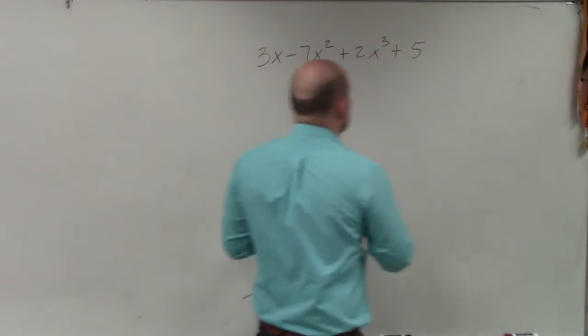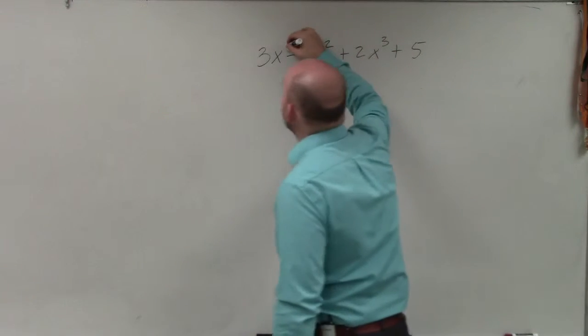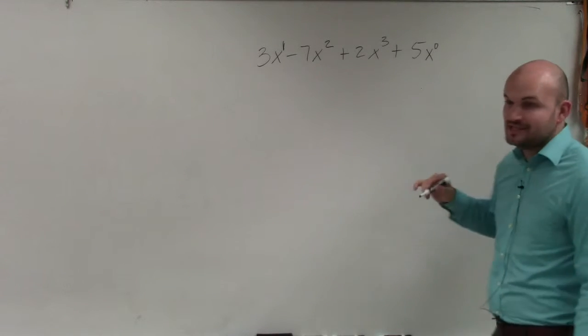We always want to write them in descending order. When I'm talking about descending order, I'm talking about the exponents. And again, as I mentioned, x we can always write as x to the first. And if there is no x, you can always write it as x to the 0.